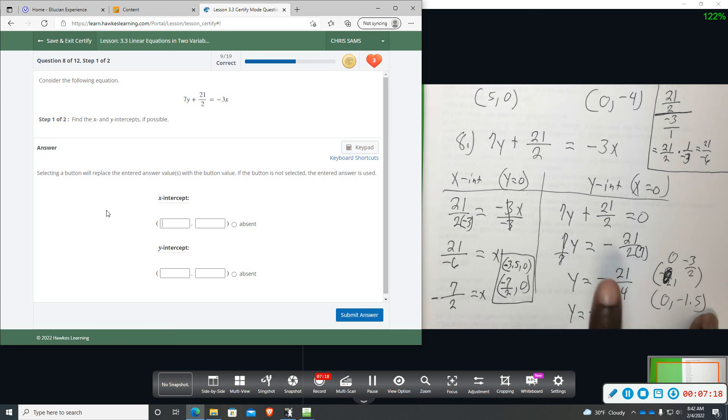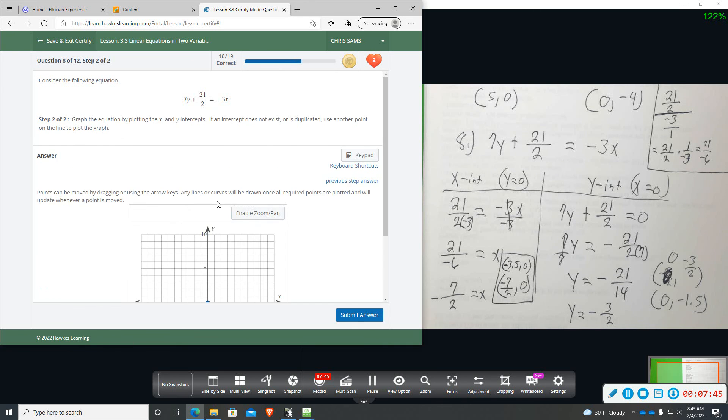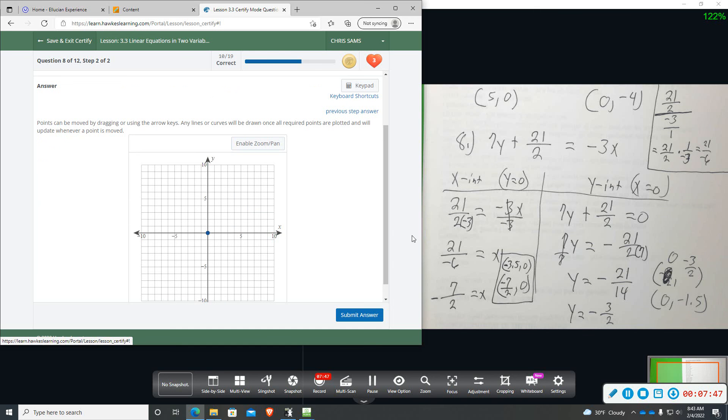So I'm going to be really focusing on the decimal points here to graph those. Because we have negative 3.5, so when we do graph, we want to look at the decimal form, negative 3.5.